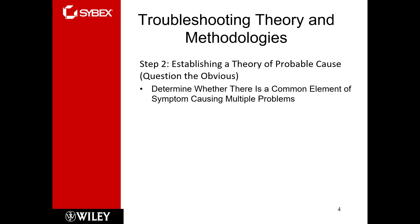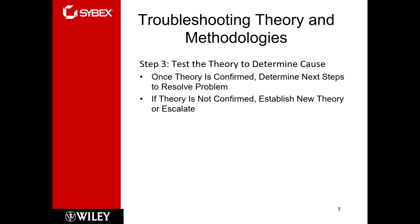Step three: test the theory to determine the cause. Once you have a theory, confirm it and determine how to resolve the issue. If the theory turns out not to be correct, go back through steps one and two and repeat as many times as necessary. If the theory cannot be established, you may have to escalate.